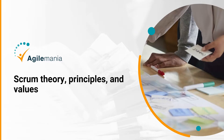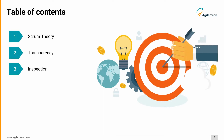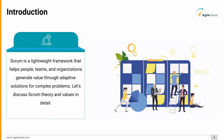In this video we will discuss Scrum theory and the three pillars Scrum relies on: transparency, inspection, and adaptability. We will also discuss the Scrum values that include commitment, focus, openness, respect, and courage. Scrum is a lightweight framework that helps people, teams, and organizations generate value through adaptive solutions for complex problems.